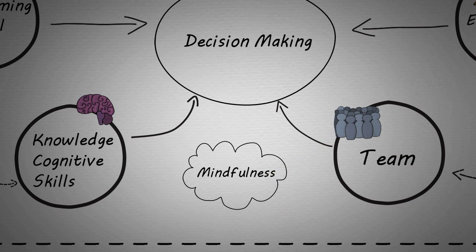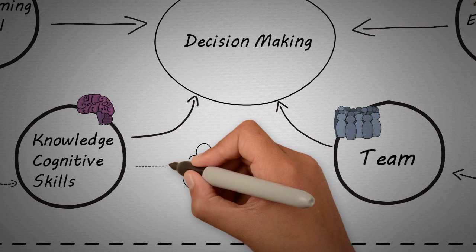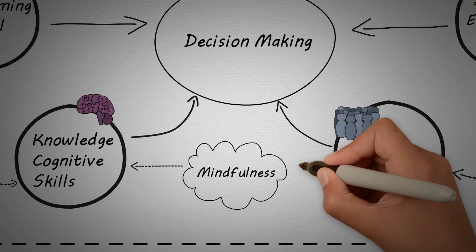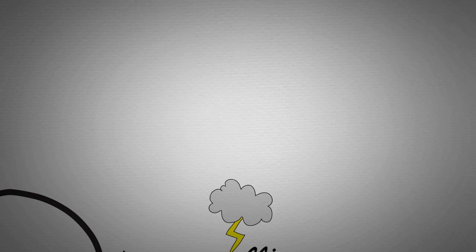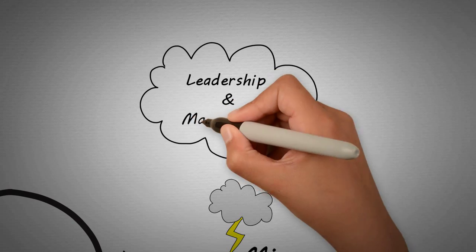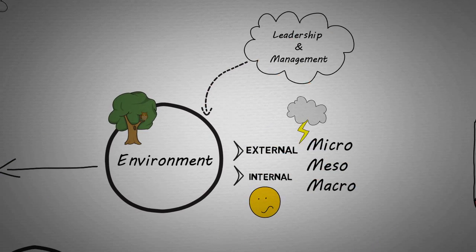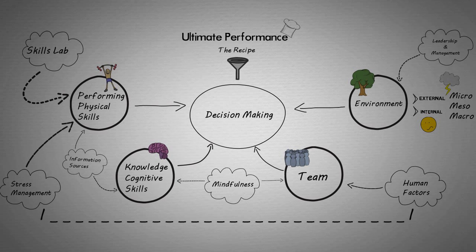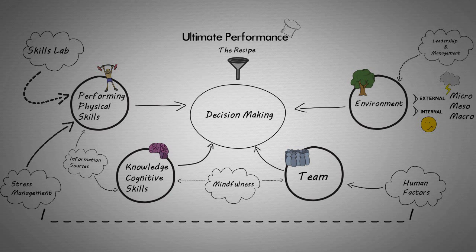Mindfulness is a cognitive skill that can improve both cognitive thinking skills as well as the way the team functions. And finally, leadership and management are ingredients that can enhance or worsen the organizational context. Put them together and you've got the ultimate performance recipe.